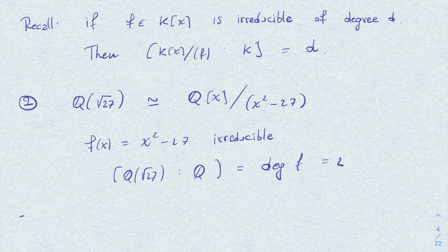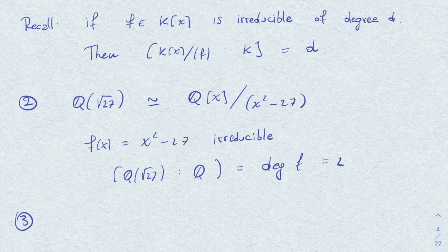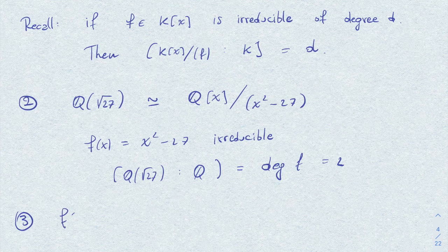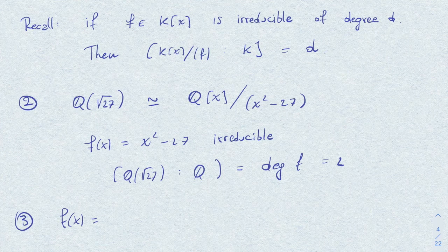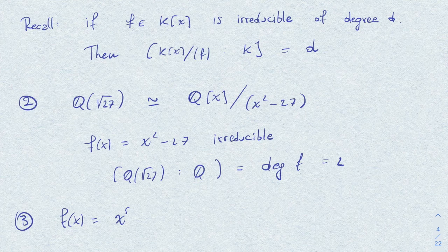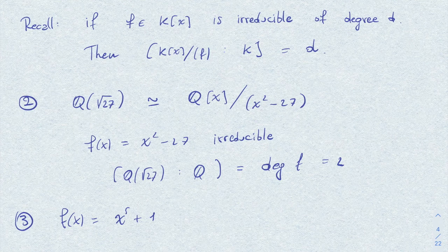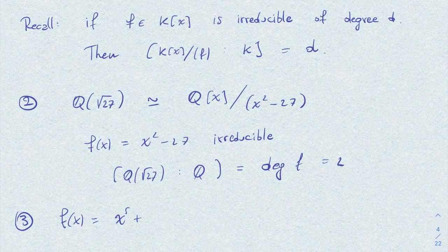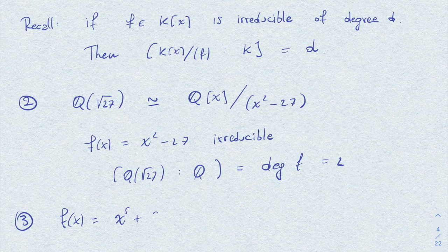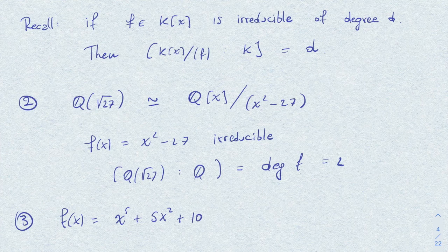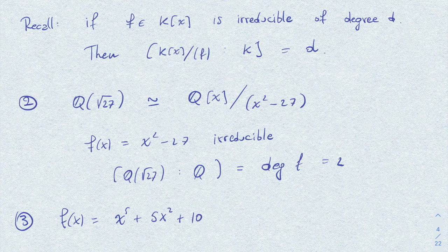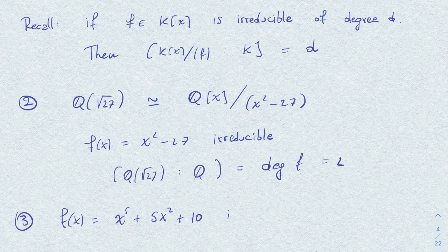And for the third exercise, we have the polynomial f given by x^5 + 5x^2 + 10, which is degree 5 and it is irreducible.